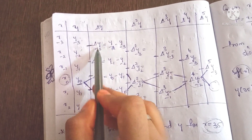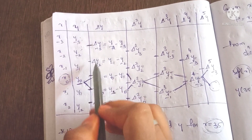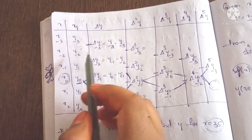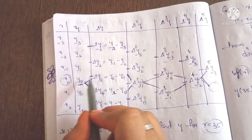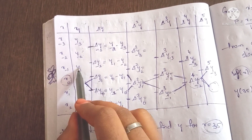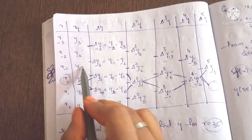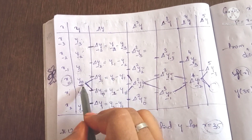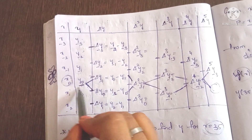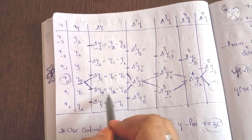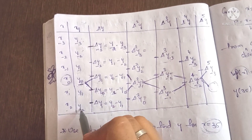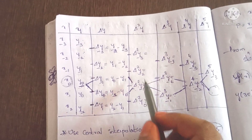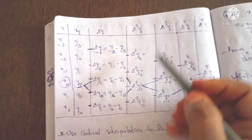The first differences are: Δy₋₃ = y₋₂ − y₋₃, Δy₋₂ = y₋₁ − y₋₂, Δy₋₁ = y₀ − y₋₁, and Δy₀ = y₁ − y₀. The second differentiation follows the same pattern with lower term minus upper term.